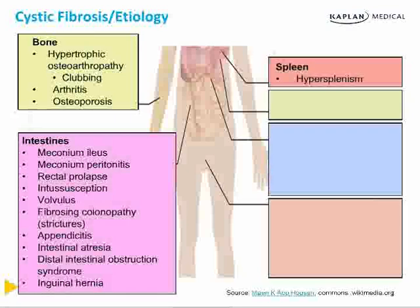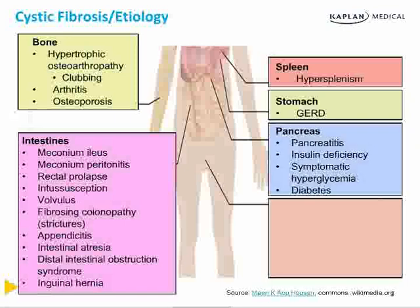There is also hypersplenism, GERD, and significant pancreatic disorder. These patients experience repeated episodes of pancreatitis, insulin deficiency, symptomatic hyperglycemia, and in the worst case, frank diabetes mellitus — because both the exocrine and endocrine portions of the pancreas stop working in patients with CF.